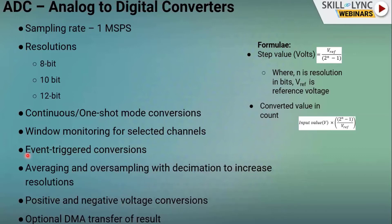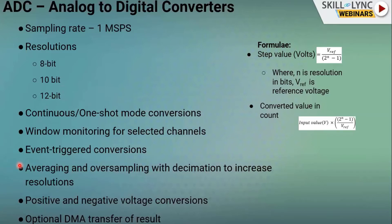Averaging and oversampling can increase the resolution beyond the hardware limit. For example, if the ADC has a 12-bit hardware resolution, we can still increase effective resolution by averaging multiple samples using the oversampling technique. This feature is available in modern ADC controllers.